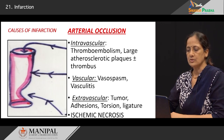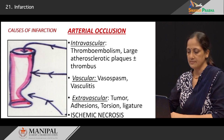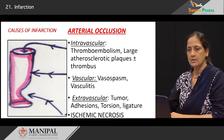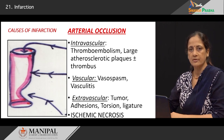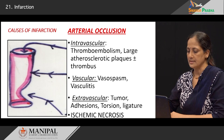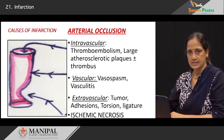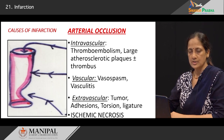The factors that cause arterial occlusion may be intraluminal, intramural, or extravascular. The intraluminal causes include thromboemboli and large atherosclerotic plaques with or without superimposed thrombi. The mural causes involve the wall of the blood vessel, including vasospasm and vasculitis or inflammation of the blood vessels. Extravascular causes are those that cause compression of the blood vessels, for example, tumors, inflammatory adhesions, torsion or twisting of an organ on its pedicle, and tight ligatures. Whenever arterial occlusion is the cause for infarction, ischemic necrosis is seen within the tissue.